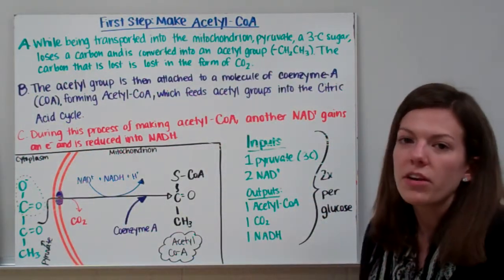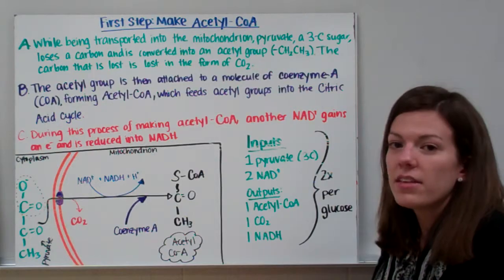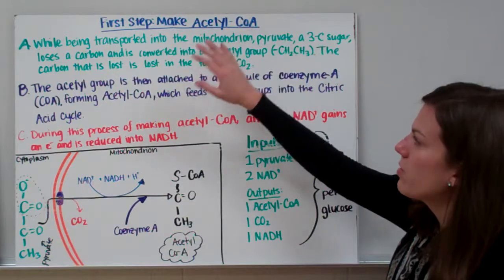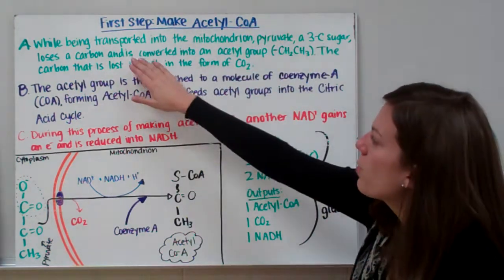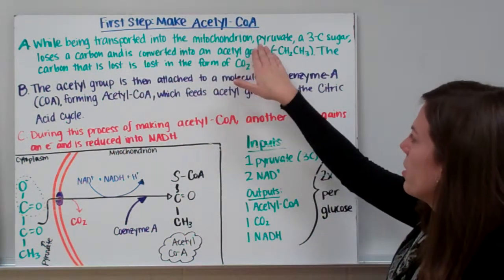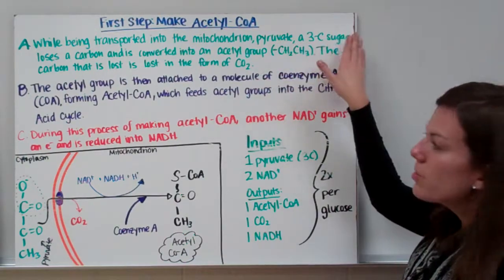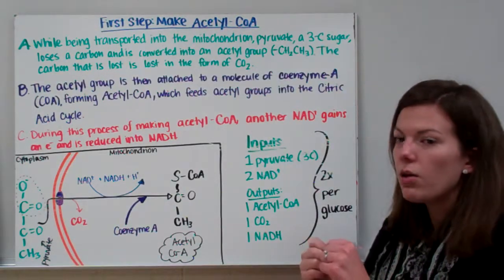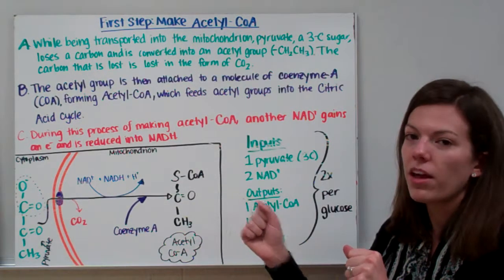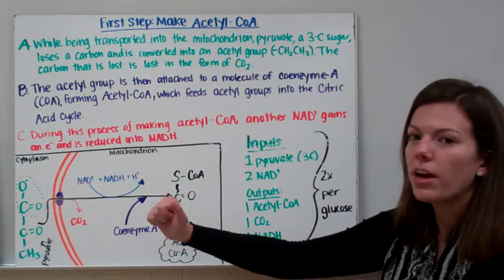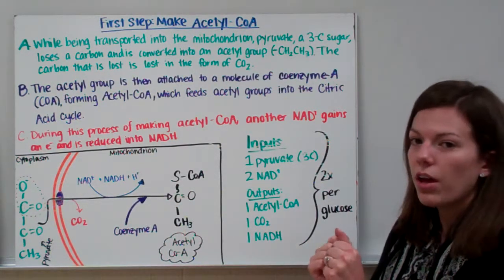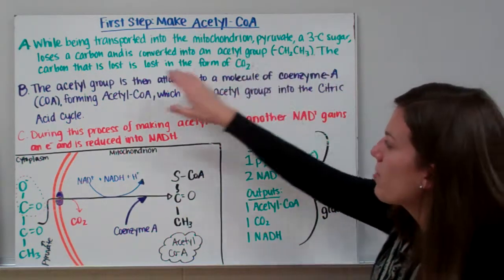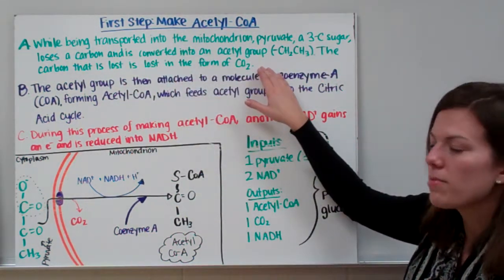Our first step in cellular respiration is to take the products of glycolysis — our pyruvate — and turn them into acetyl-CoA. While being transported into the mitochondrion, pyruvate, which is a 3-carbon molecule, loses one carbon as carbon dioxide and is converted into an acetyl group (CH3). The remaining two carbons stay linked together as the acetyl group.